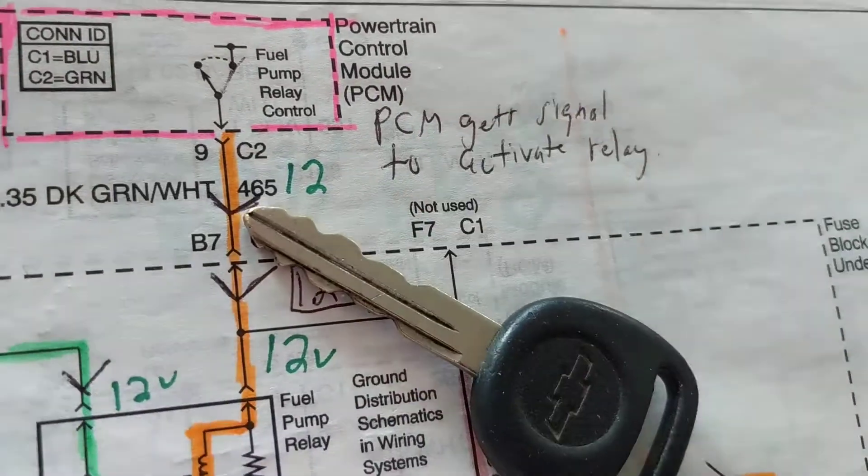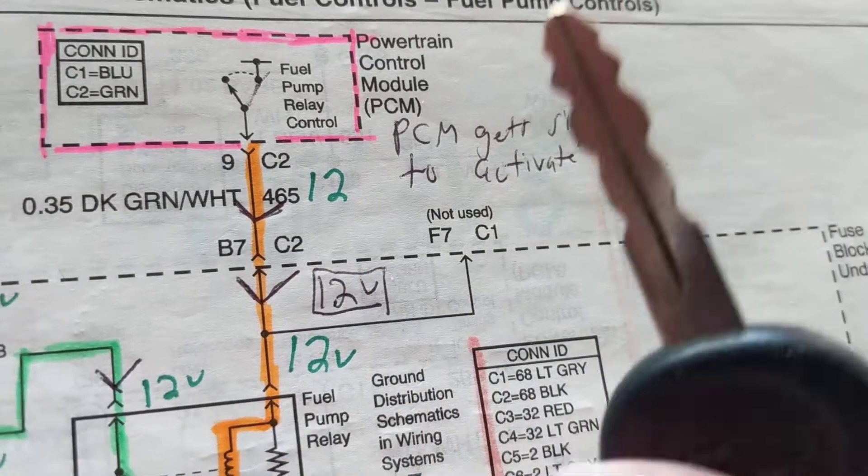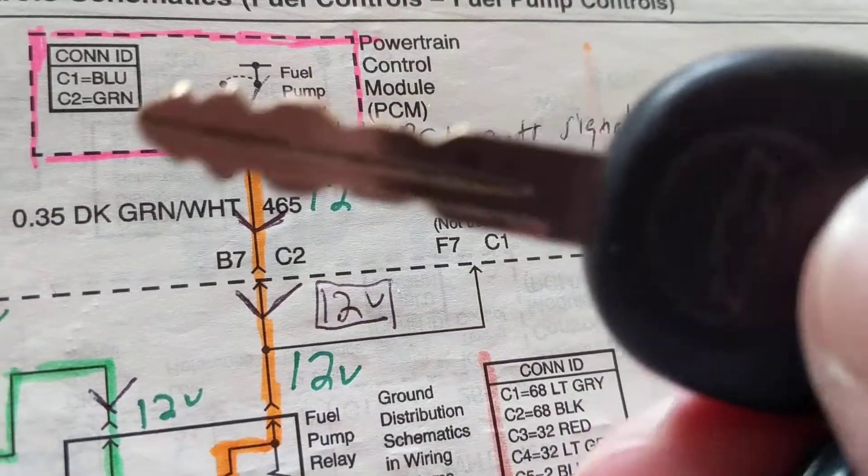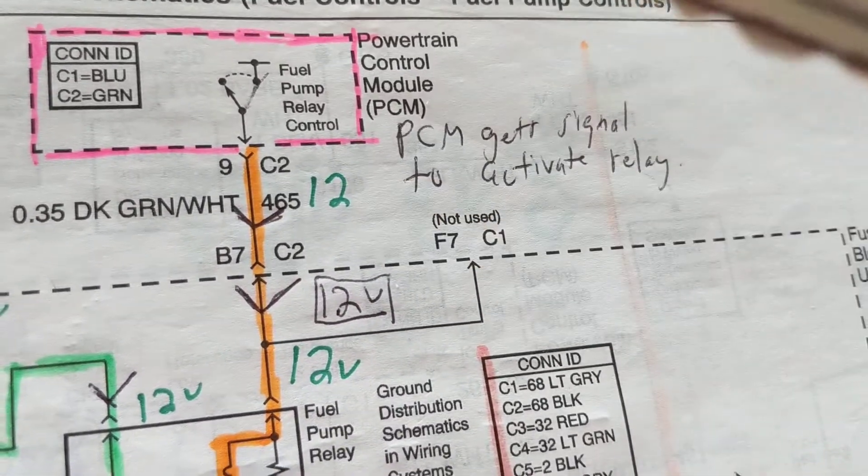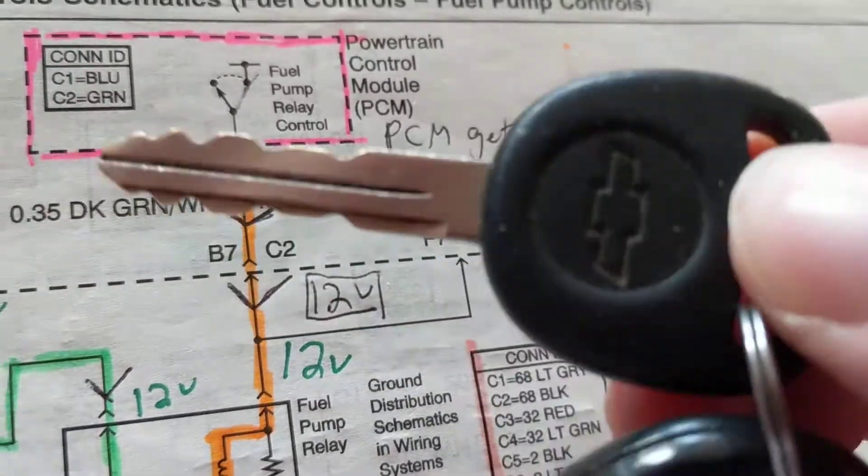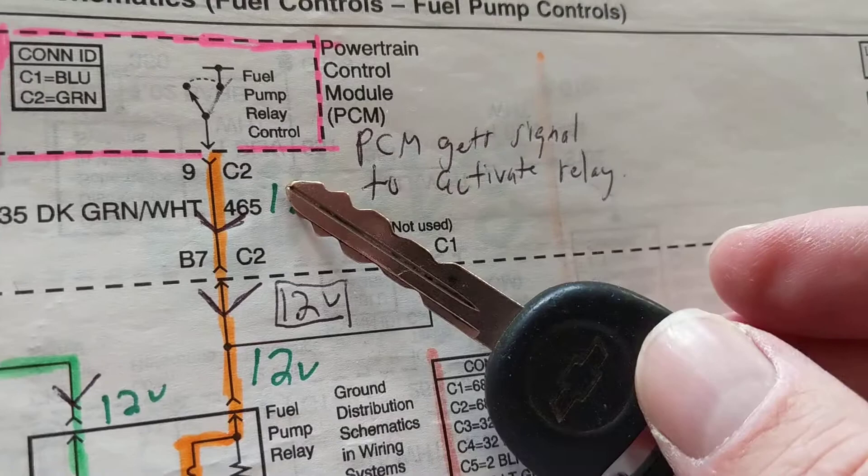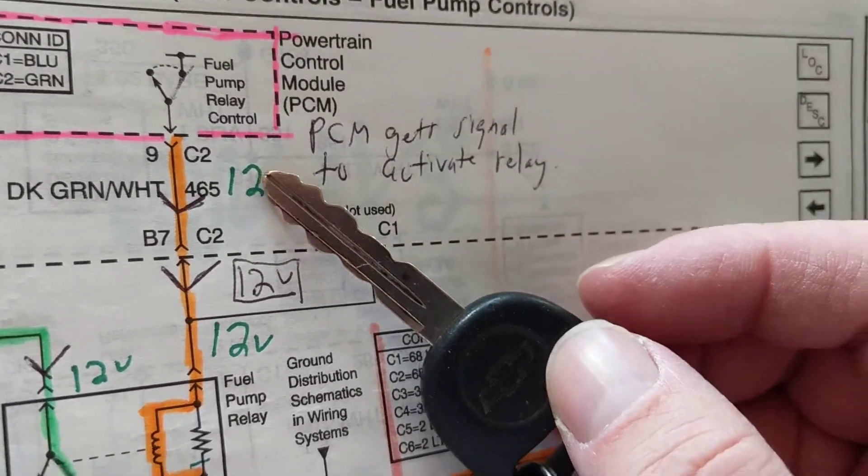And says, okay, there's a match. Now this is what I'm looking for, this is the information I'm looking for. That means the person turning this key has the right key with the right transmitter on, with the right chip on it. Now he'll talk to the BCM, the body control module. The body control module will say to the PCM, right, so we have three modules involved so far.